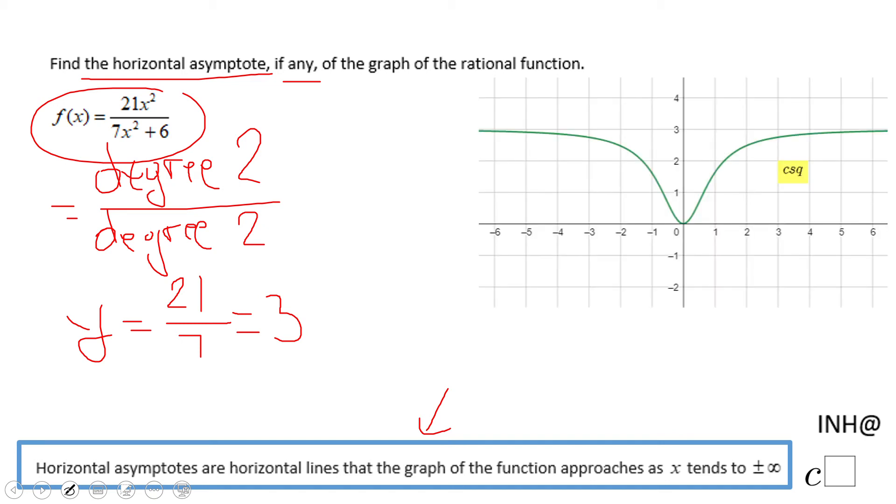You notice here this graph is getting closer and closer to 3 when x is getting larger. And the same thing, when x is getting smaller, the graph is getting closer and closer to positive 3.